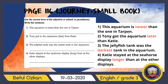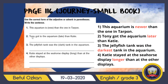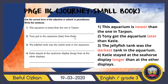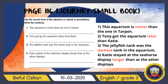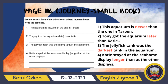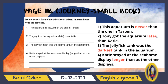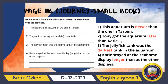Second sentence: 'Tony got to the aquarium ___ than Katie.' I can see 'than,' so I compare two people — Tony and Katie — and add -er. The word 'late' already ends in -e, so I just add -r. The answer is 'later.' Tony got to the aquarium later than Katie.